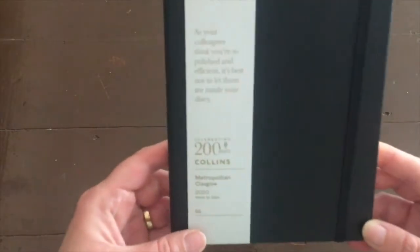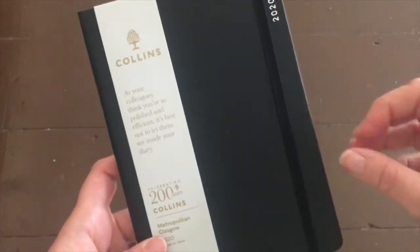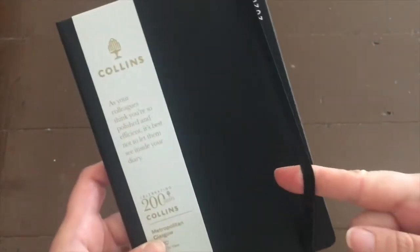The Metropolitan Glasgow is very small and cute and comes with a stretchy band so that you can keep it closed. It's perfect for mums who want to carry a diary in their handbag out and about with them. The cover is nice and solid.